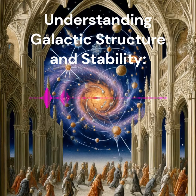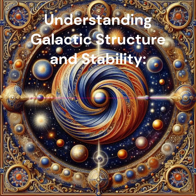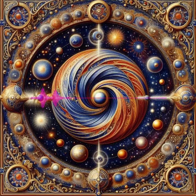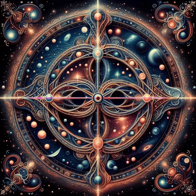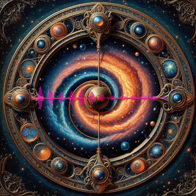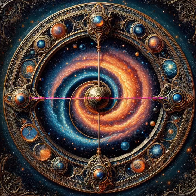Virial Theorem. This principle is a cornerstone in astrophysics, linking a galaxy's kinetic energy with its potential energy to gauge its stability. A galaxy in virial equilibrium is like a well-balanced seesaw, with its gravitational pull perfectly counterbalanced by the motion of its stars and gas.